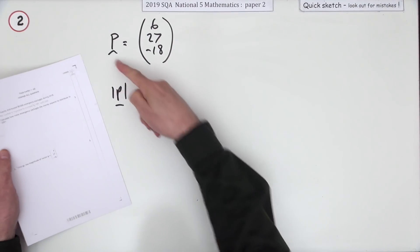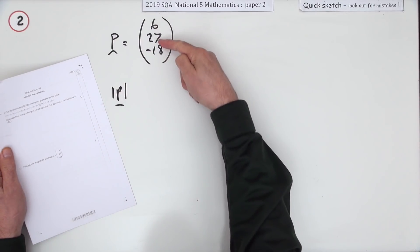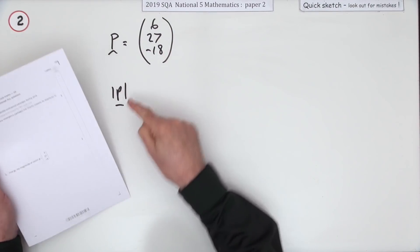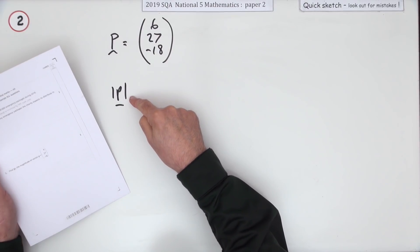So in question two, it gives you the components of this vector p: (6, 27, -18), and it says what's the magnitude of this vector?